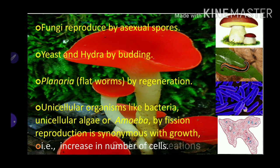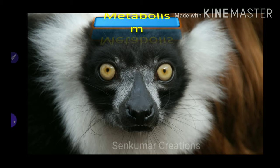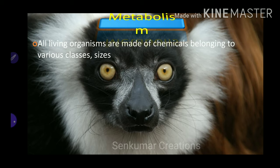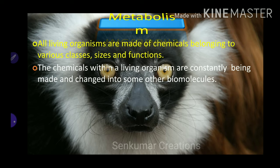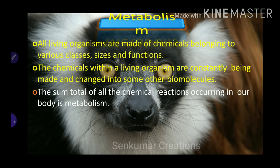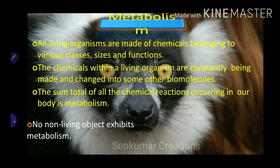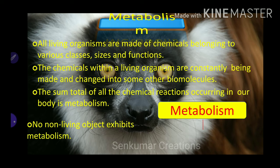Next is metabolism. All living organisms are made of chemicals belonging to various classes, sizes, and functions. The chemicals within a living organism are constantly being made and changed into other biomolecules. The sum total of all the chemical reactions occurring in our body is metabolism. No non-living object exhibits metabolism. Metabolism can be classified into two groups: anabolism and catabolism.